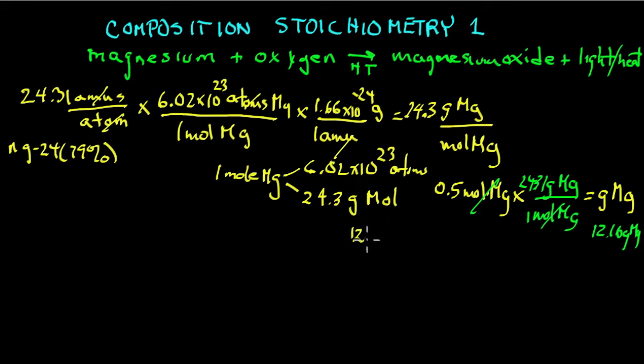12.04 times 10 to the 23rd atoms of magnesium, and I want to convert that to moles of magnesium. You put what you want to get rid of in the denominator: 6.02 times 10 to the 23rd atoms of magnesium. Write this out - don't just put numbers down here. Remember, we deal with quantities. Quantity is a number plus a unit. And up here we have 6.02 times 10 to the 23rd atoms is one mole of magnesium. And of course the math here, you come out with 2 moles.